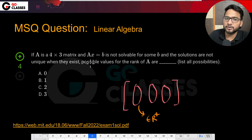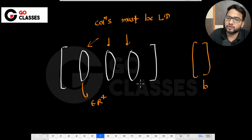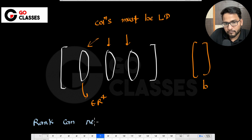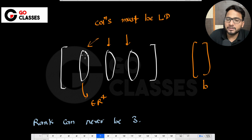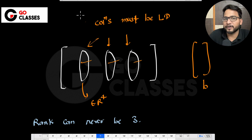So columns are linearly dependent. Now they are asking the possible values of rank of A. Since the columns must be linearly dependent, rank can never be 3. Because if rank is 3 it means you have three linearly independent columns, which is not possible here. At least one column will be redundant, so rank cannot be 3.